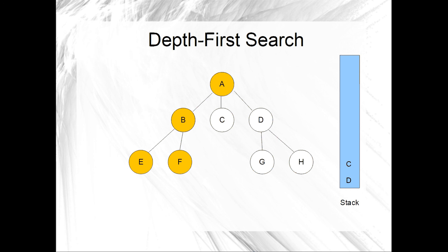Since the stack is not empty, we will have another repetition. The next repetition begins by popping C off of the stack and marking it. Next, we push all adjacent unmarked vertices onto the stack. Since the stack is not empty, we will have another iteration. That iteration will begin by popping D off of the stack and marking it. Next, we push all adjacent unmarked vertices onto the stack — this includes H and G.